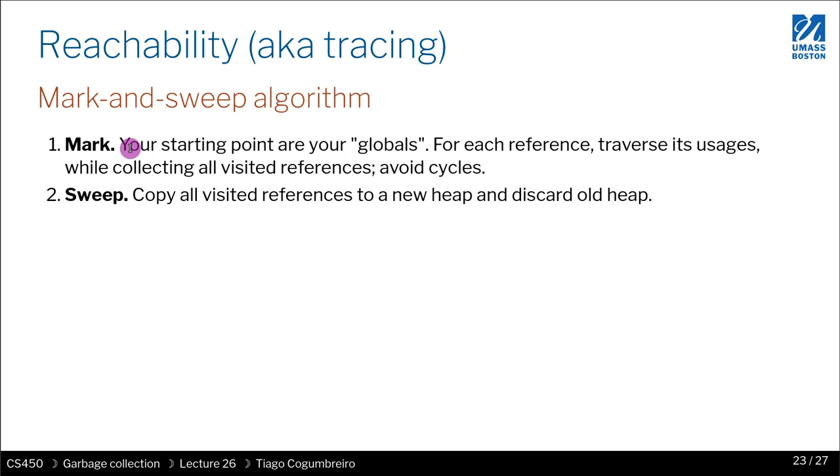So you start from a set of initial references, which are your live references. And then what you need to figure out is what are all the other references that are reachable via these starting references. So you navigate through that graph of a reference points to a data structure, which holds another reference or potentially many references. And you mark the one where you start from.